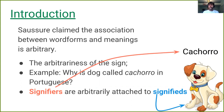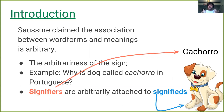Saussure posited that the association between word forms and meanings is arbitrary. What this means is that signifiers — for example, the word cachorro in Portuguese — are arbitrarily attached to the signified, which are the things they represent in the world. So choosing the word cachorro to refer to dogs in Portuguese is an arbitrary choice, and any other word would work in the same place.